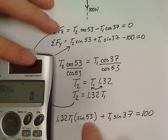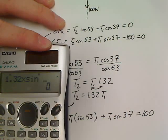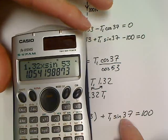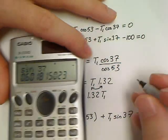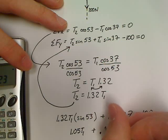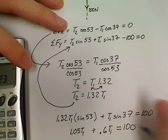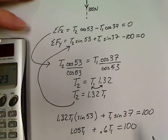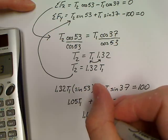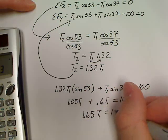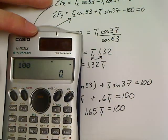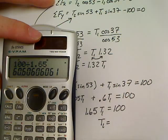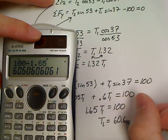1.32 times the sine of 53. So this is 1.05. So this is 1.05 T1. Now, we'll take the sine of 37, which is 0.6. So this would be plus 0.6 T1 equals 100. So all I did was take the sine of 37, and I slid it over here in front of the T1 variable. So I'm going to have 1.65 T1 equals 100. So now we'll go 100 divided by 1.65, 60.6. So T1 is equal to 60.6 Newtons.